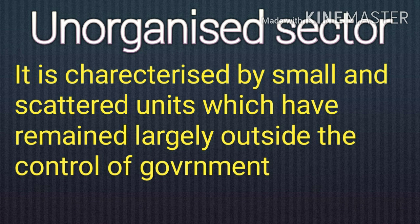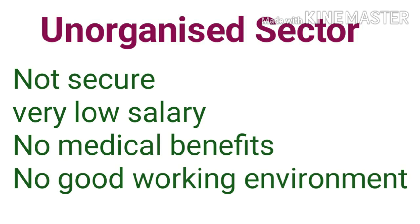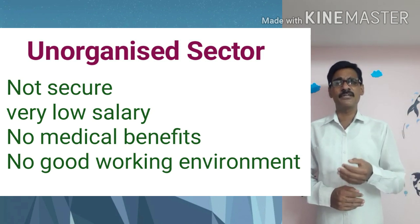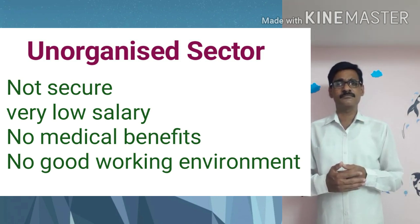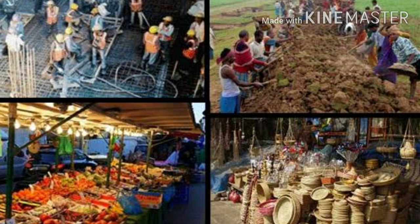The unorganized sector is characterized by small and scattered units, which largely remain outside of government control. Although there are rules and regulations, they are not enforced in these sectors. Employment security is not there — this is the main problem. Low-paid employment is common, there is no overtime payment, and there are no good working conditions. Sometimes workers are asked to leave without any reason, even in off-seasons, and there are no provisions for paid leave or sick leave.